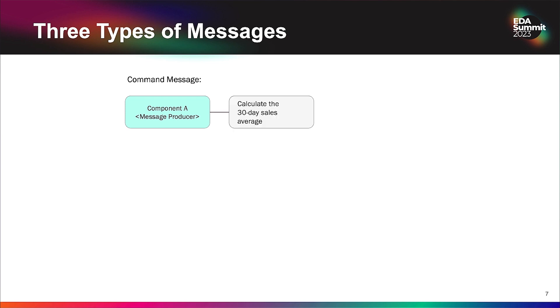When we think about exchanging messages between APIs — whether they're synchronous REST-based or whether they're async, event-driven, or event-notification style — there are primarily three types of messages we interact with. The first is a command message, where we have a component — the message producer — sending a command to another component, perhaps asking it to calculate a 30-day sales average. That command is sent to another component that receives it, acts on it, and provides a response back.